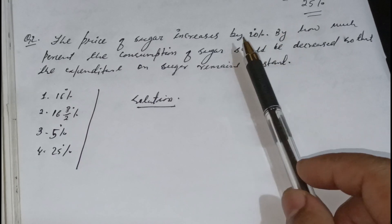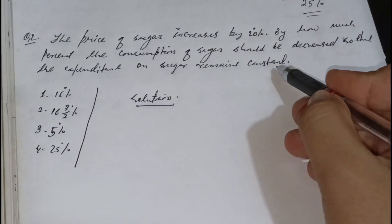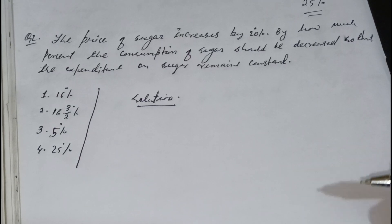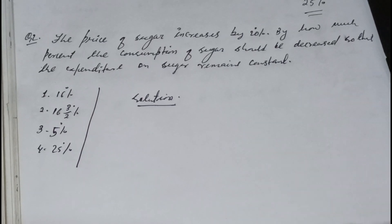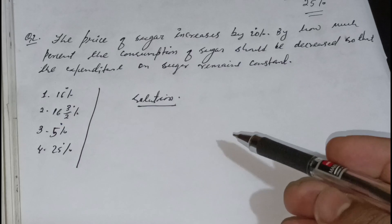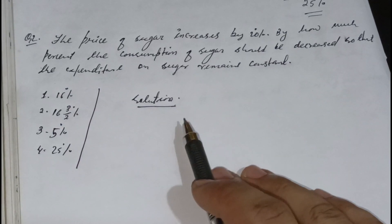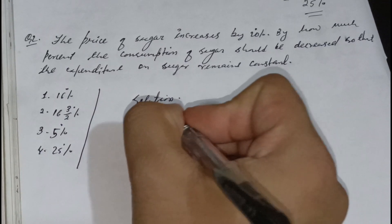If we find the price of sugar, we can invest the price in sugar. We will find how much percent the consumption will decrease. I am using a shortcut trick — it is a time-saving way. I will use a formula for the consumption.